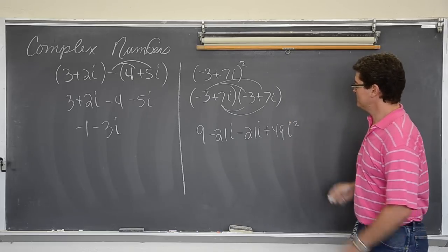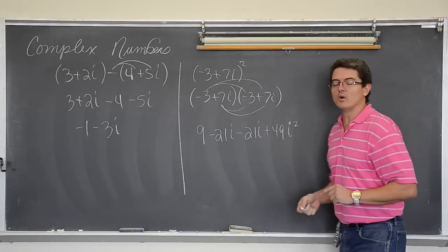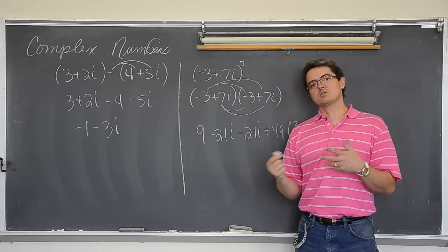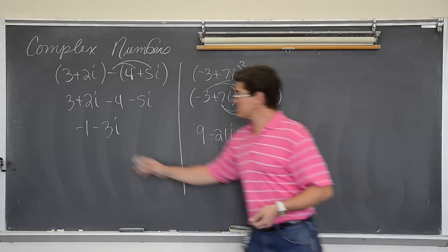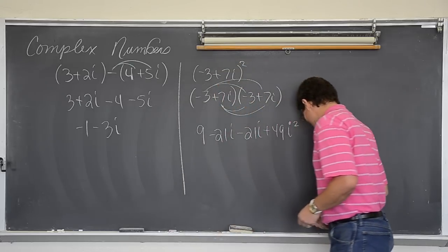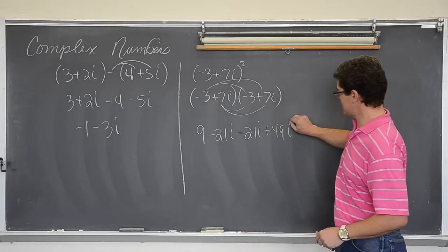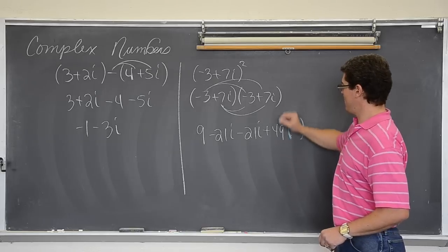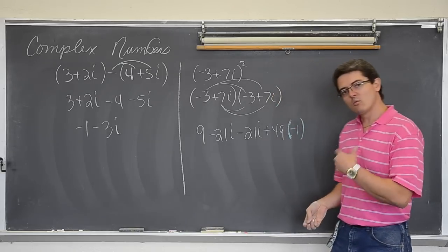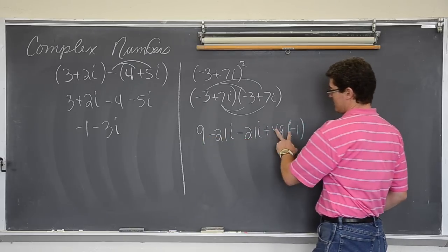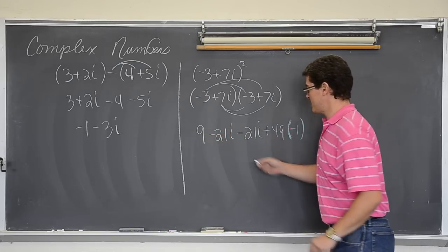And here we start, this is the only place where there is a difference when you are working with complex numbers compared to just regular algebra. Instead of this just being like an x squared, it is i squared. Well, we just talked about how i squared was equal to negative 1. So this i squared comes out and then its place goes negative 1. And now we are going to combine like terms. We have 9 and this is going to be negative 49. So negative 49 plus 9 is negative 40.